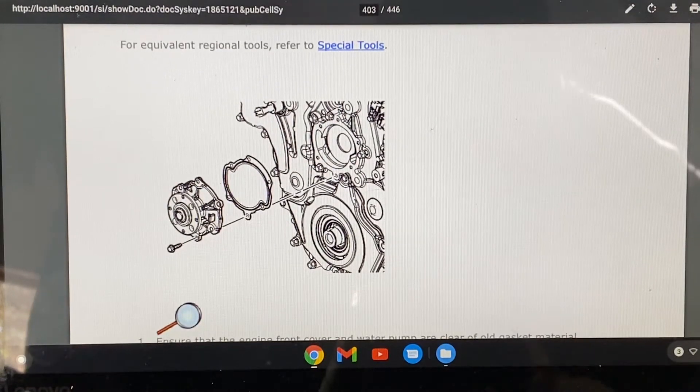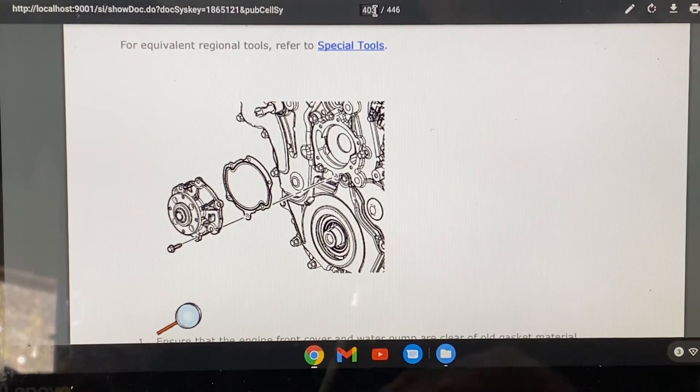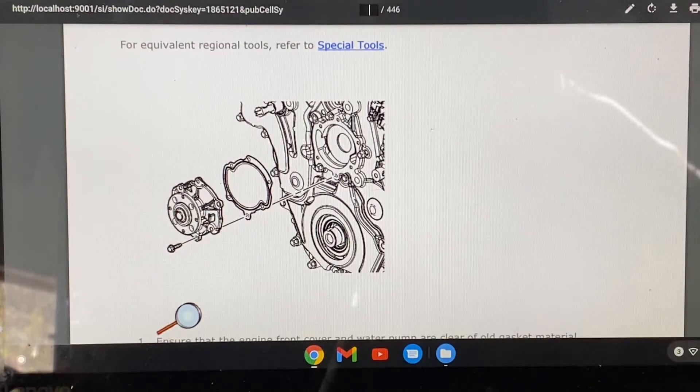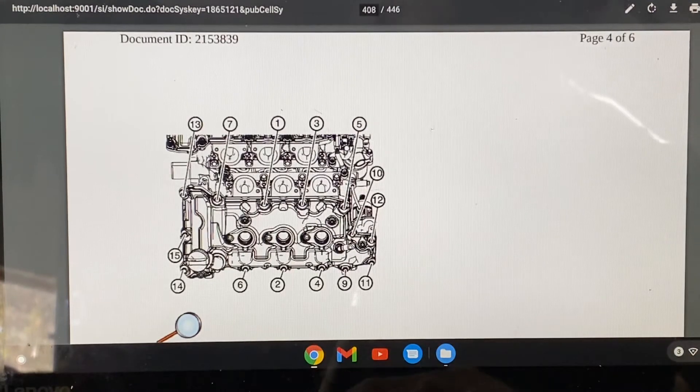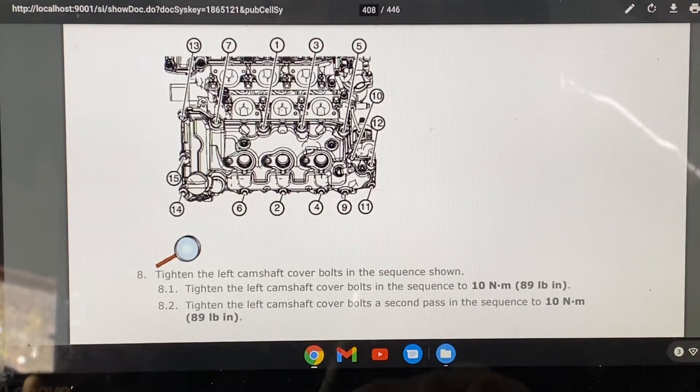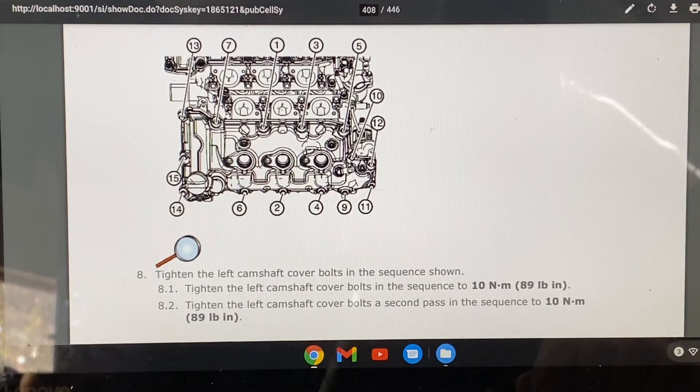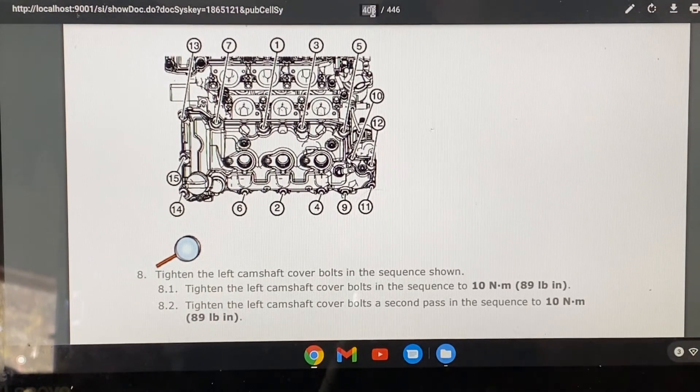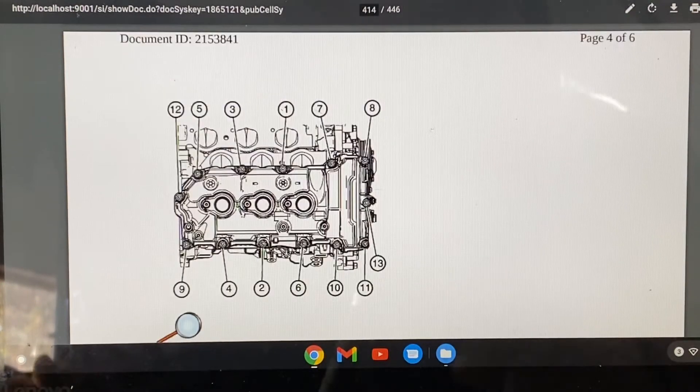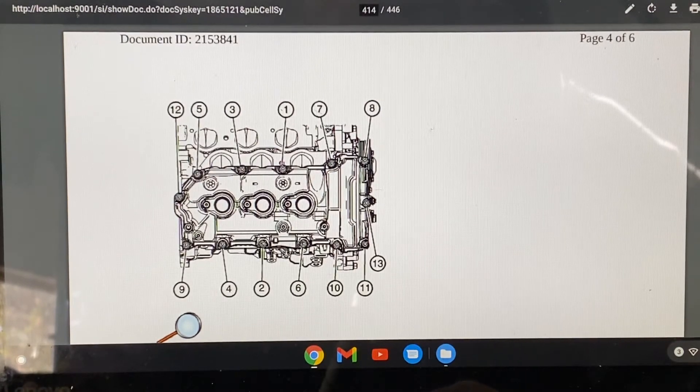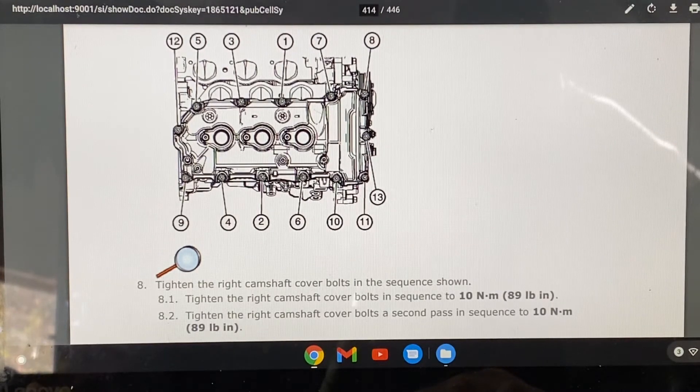Let's just move on to the valve cover left. There you go, there's your left valve cover torque sequence and number, looks like 89 inch-pounds. This is your right valve cover. And then finally I think the intake manifold.